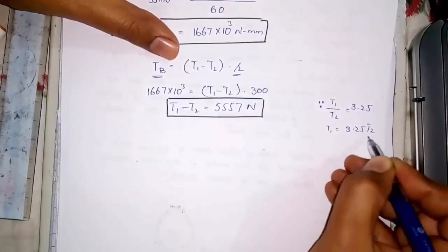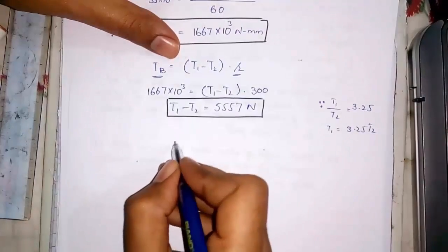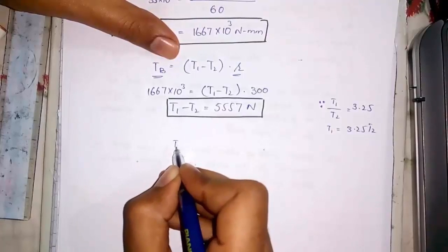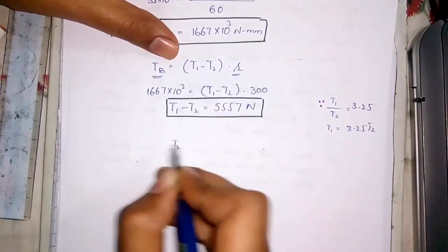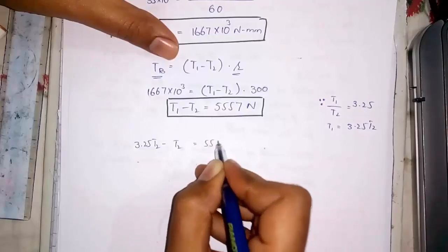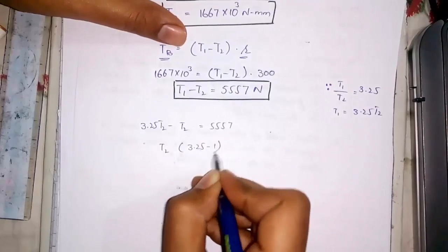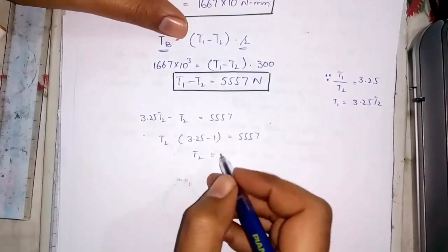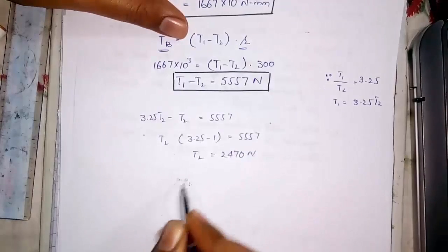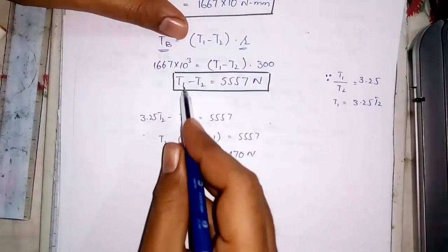We have calculated T1 over T2 earlier. So, T1 is equal to 3.25 T2. Substitute this value in above relation. And we have T2. Use this value to find T1.